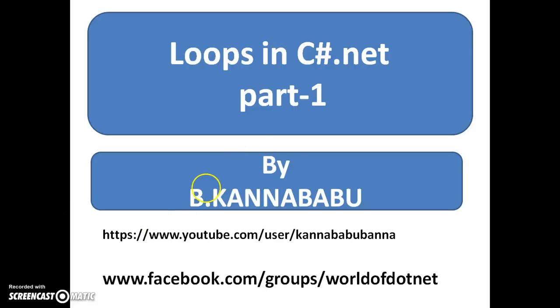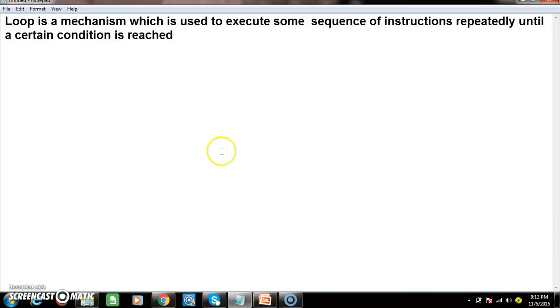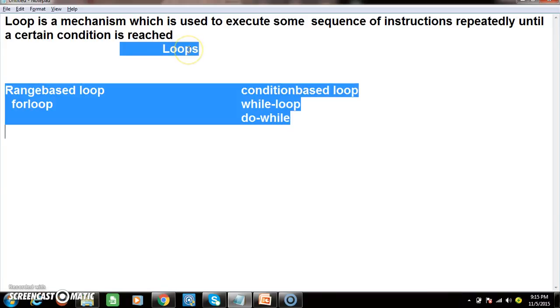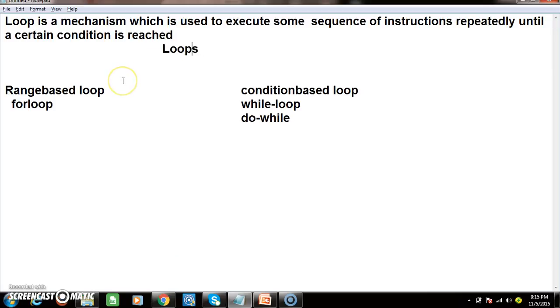We need to discuss about loops. Initially, what is a loop? A loop is a mechanism which is used to execute some set of statements or some sequence of instructions repeatedly until a certain condition is reached. Loops are basically categorized into two types: one is range-based loop, and the other one is condition-based loop. For loop comes under range-based loop, while loop and do-while loop come under condition-based loop.